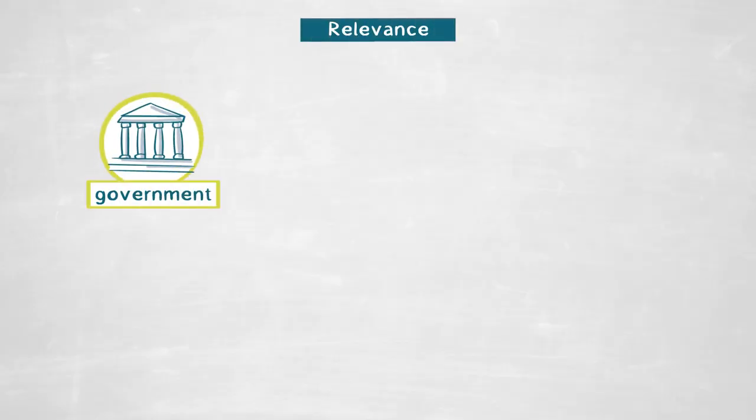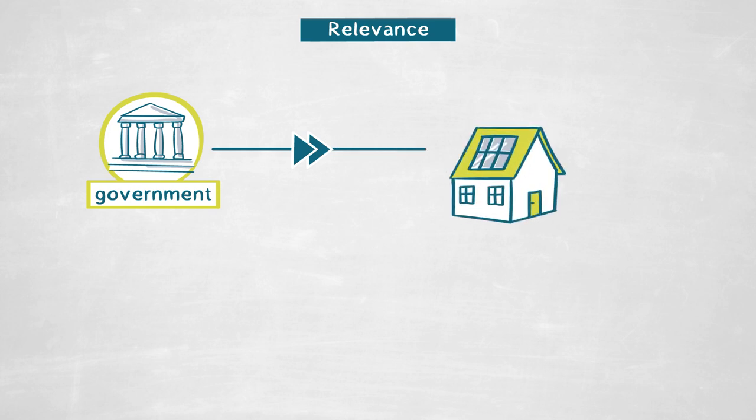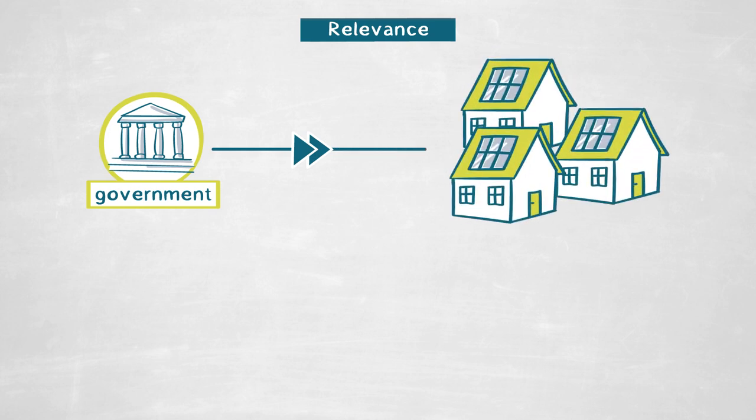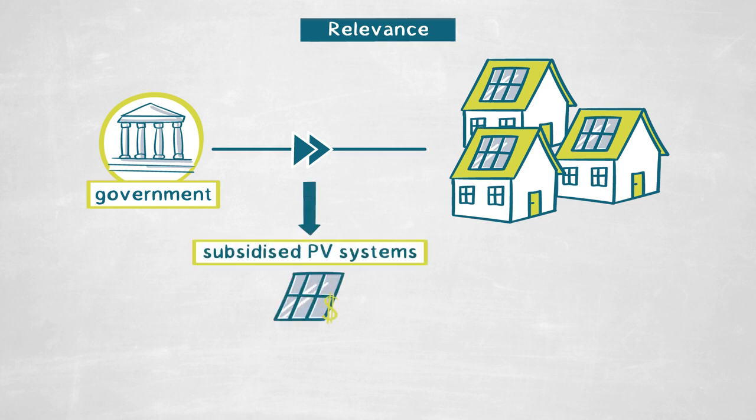Going back to the initial question of understanding the diffusion of PV systems, we are now able to develop efficient policies on a house-by-house basis. If a government is interested in speeding up the adoption rate through a subsidy system, we can now focus on locations for such subsidized PV systems which are highly visible to many potential adopters.